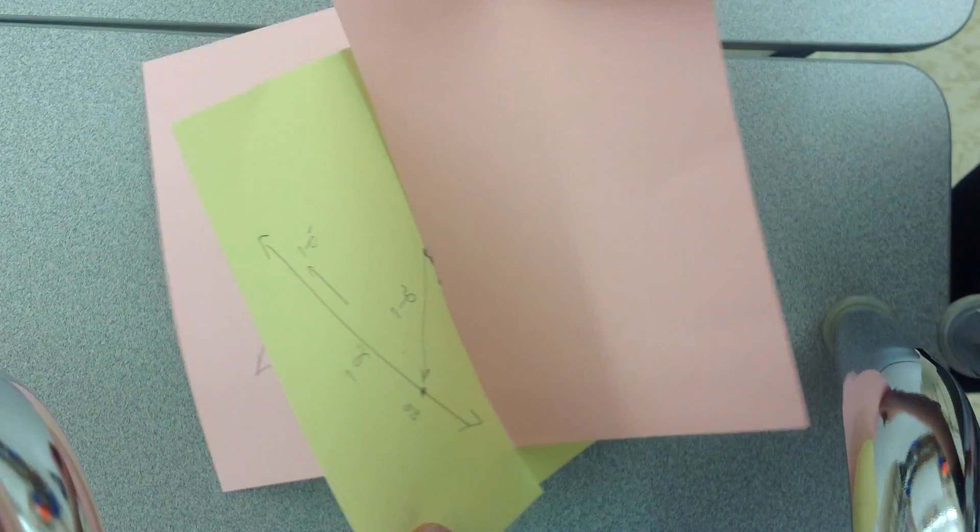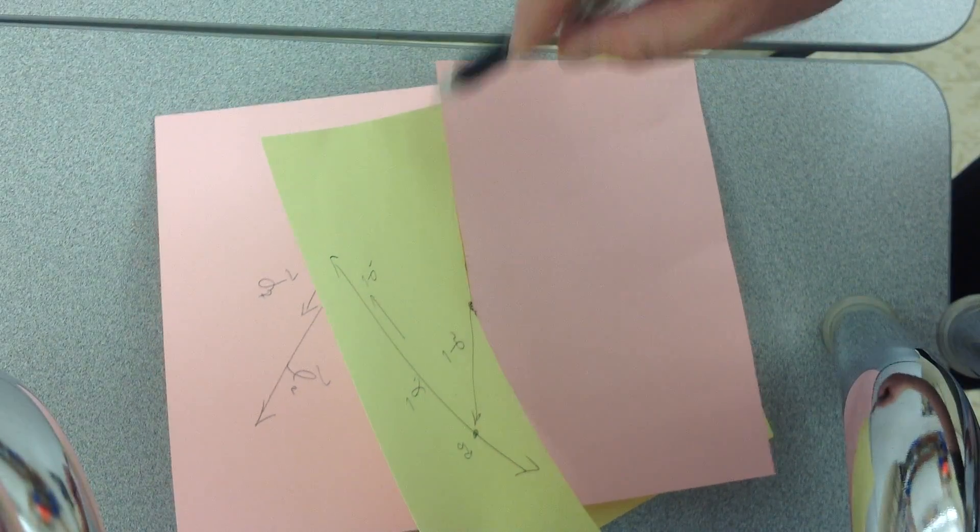So that intersection of those two pieces of paper, that creates the line of intersection, and that's what they want us to find.